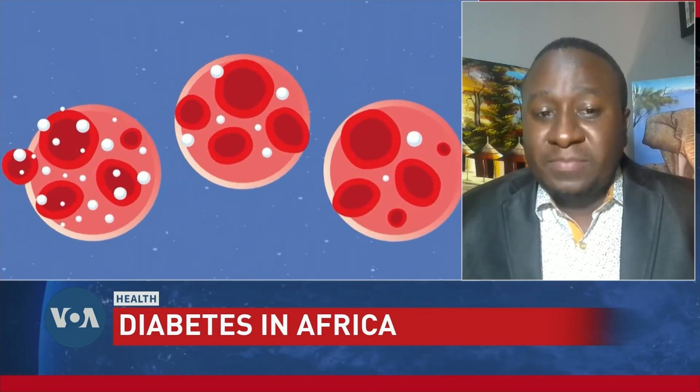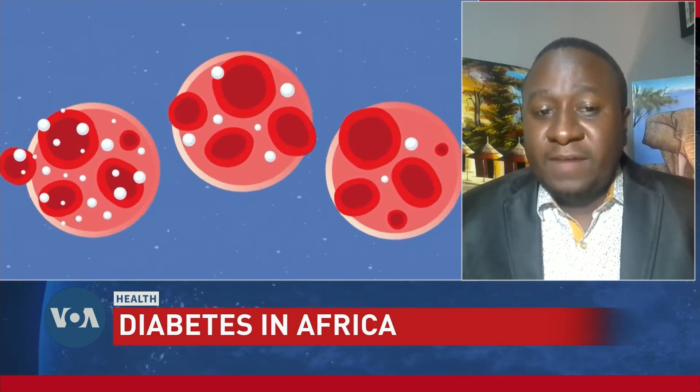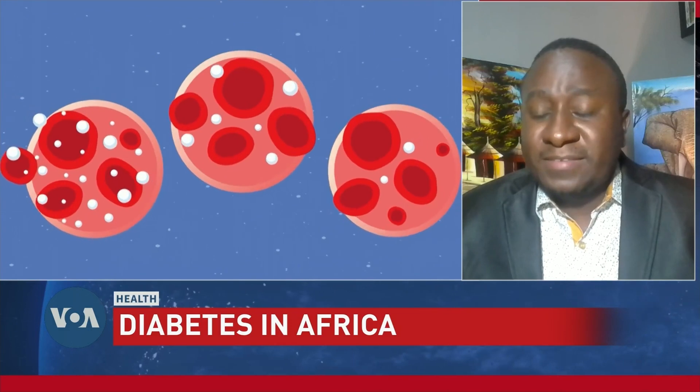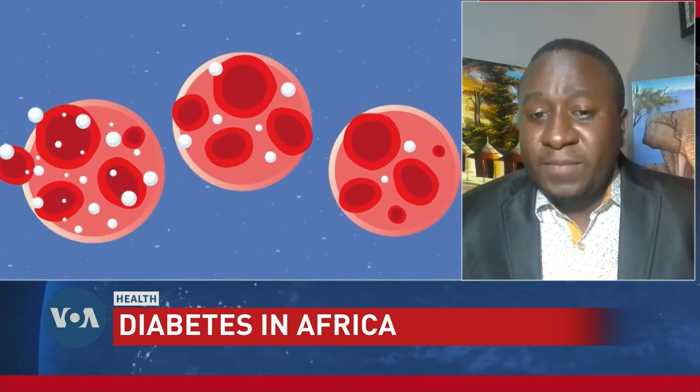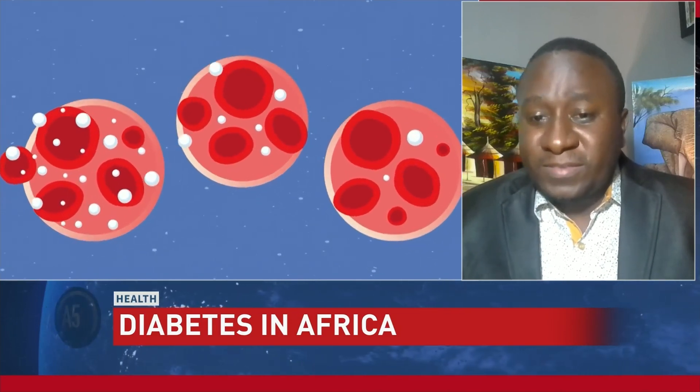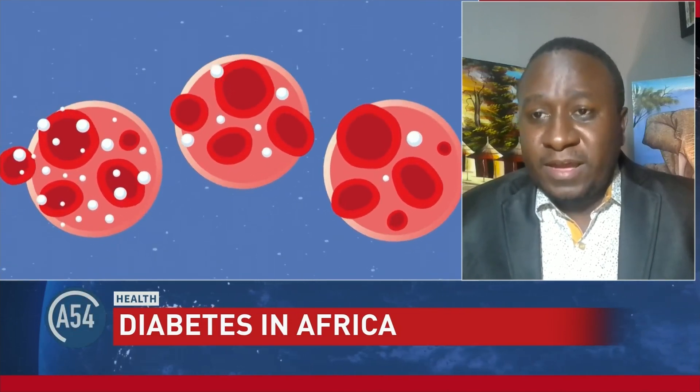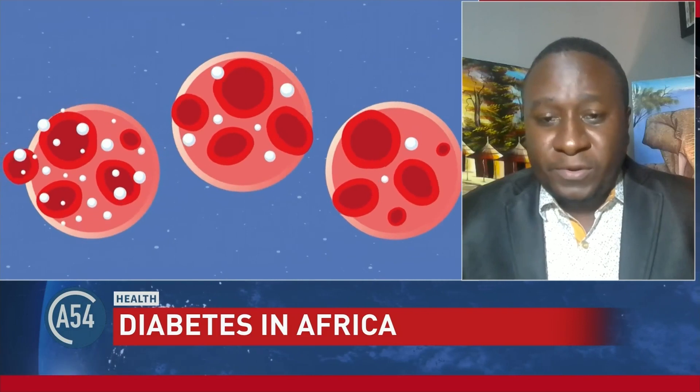People with diabetes may have symptoms like excessive urination (polyuria), excessive thirst (polydipsia), constant hunger (polyphagia), weight loss, vision changes, headache, and fatigue.